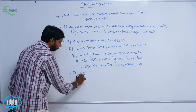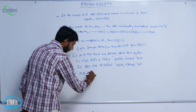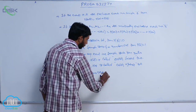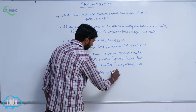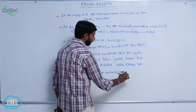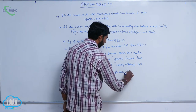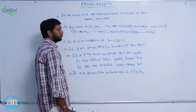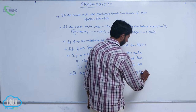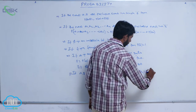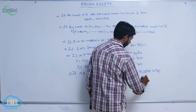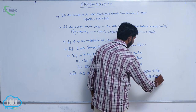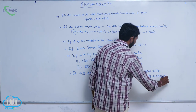If A and B are two events in a sample space, and A is a subset of or equal to B, then P(A) is less than or equal to P(B), and P(B minus A) is equal to P(B) minus P(A).